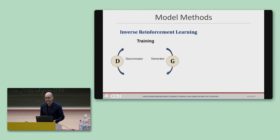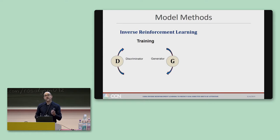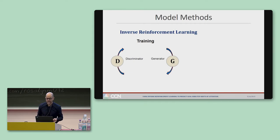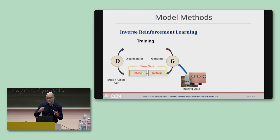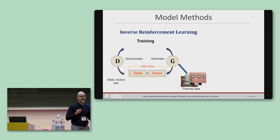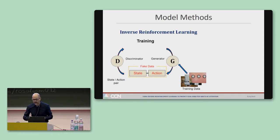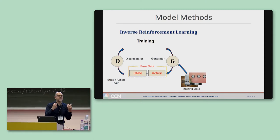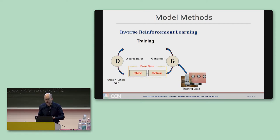Translating this into a box model for training: it all starts with a generator (G) and a discriminator (D), each a neural network locked in an adversarial process. The generator takes an image input and generates a sequence of fixations — think of these as fake eye movements. Each eye movement is an action that becomes paired with a particular state, mainly the input image, to create what is referred to as a state-action pair.